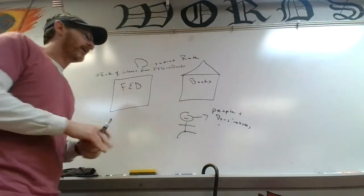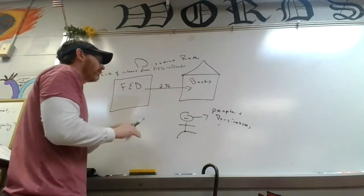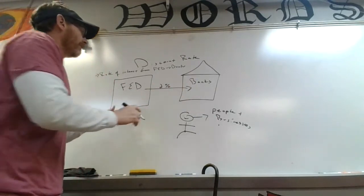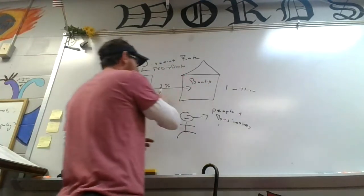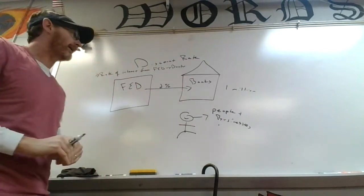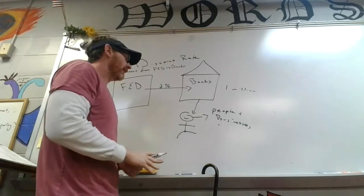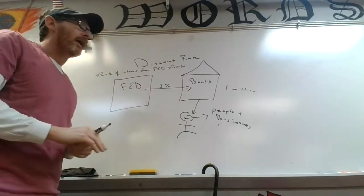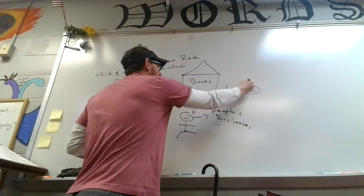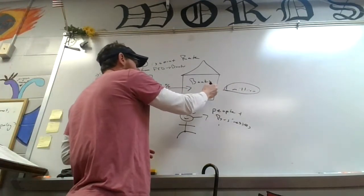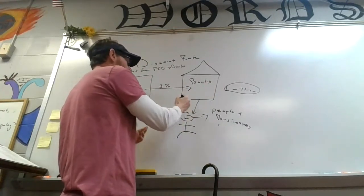So let's say the Fed charges 2% interest to banks on a million dollars. And the bank wants to give, let's say this person comes in and wants to start a business and it's a great idea and the bank believes in it and wants to give this person a million dollars. So the bank gives the person a million bucks and charges them, let's say, 7%.